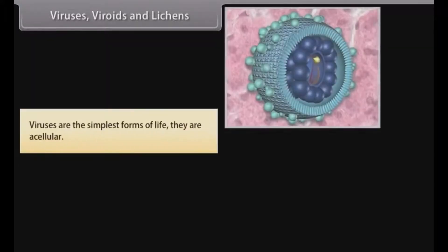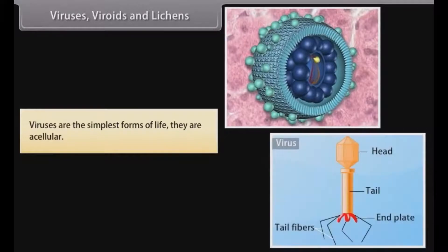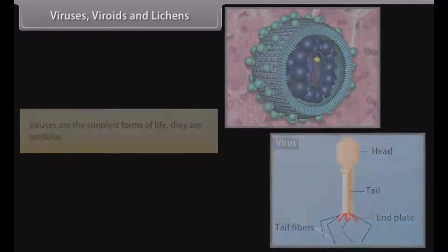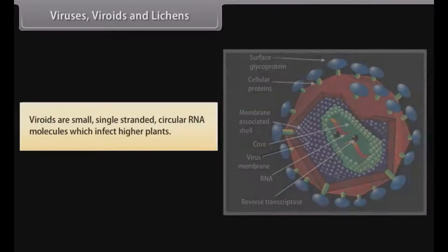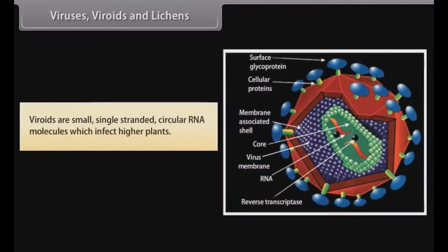Viruses are the simplest forms of life. They are acellular. Viroids are small single-stranded circular RNA molecules which infect higher plants.